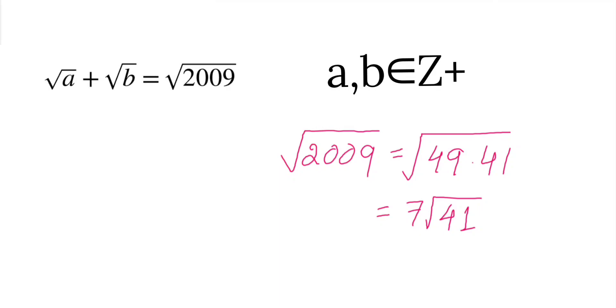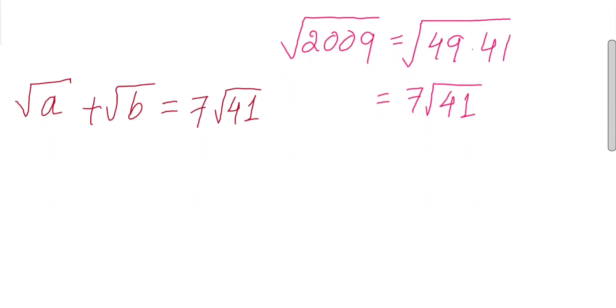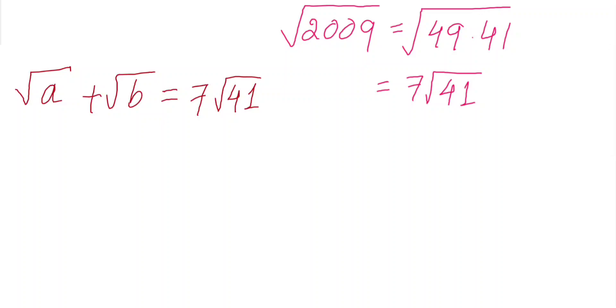So if we can substitute something for a and b such that now this question becomes like square root of a plus square root of b equals 7 square root of 41. Notice that, let's substitute something for this question.